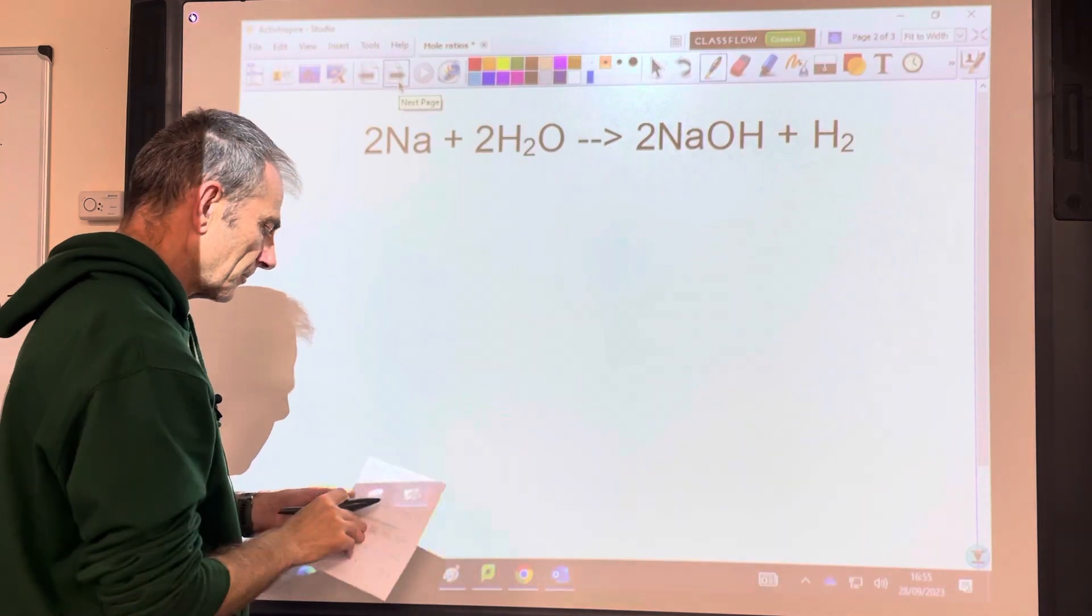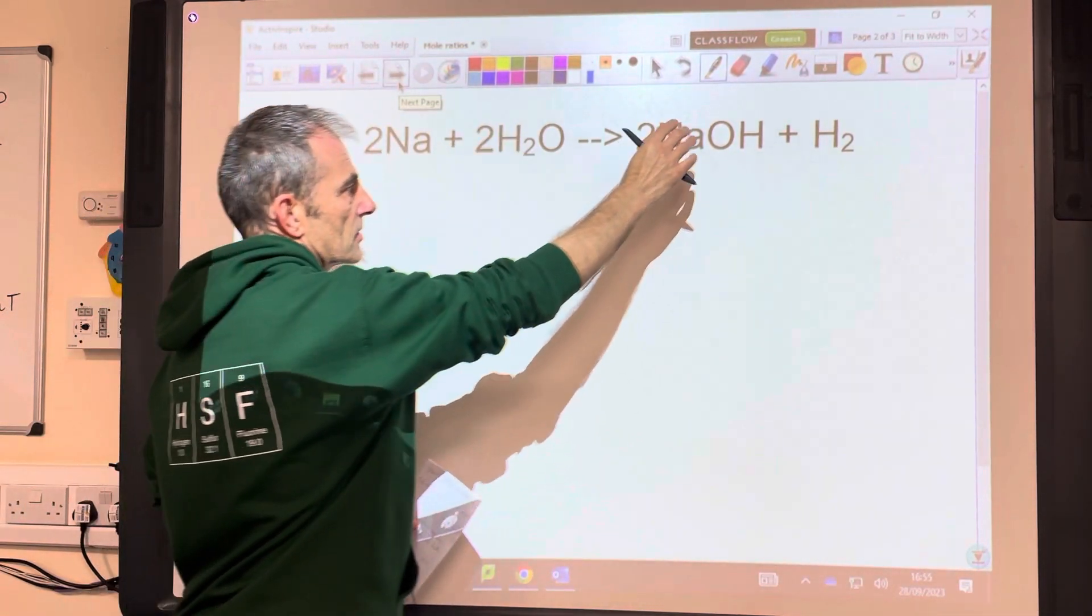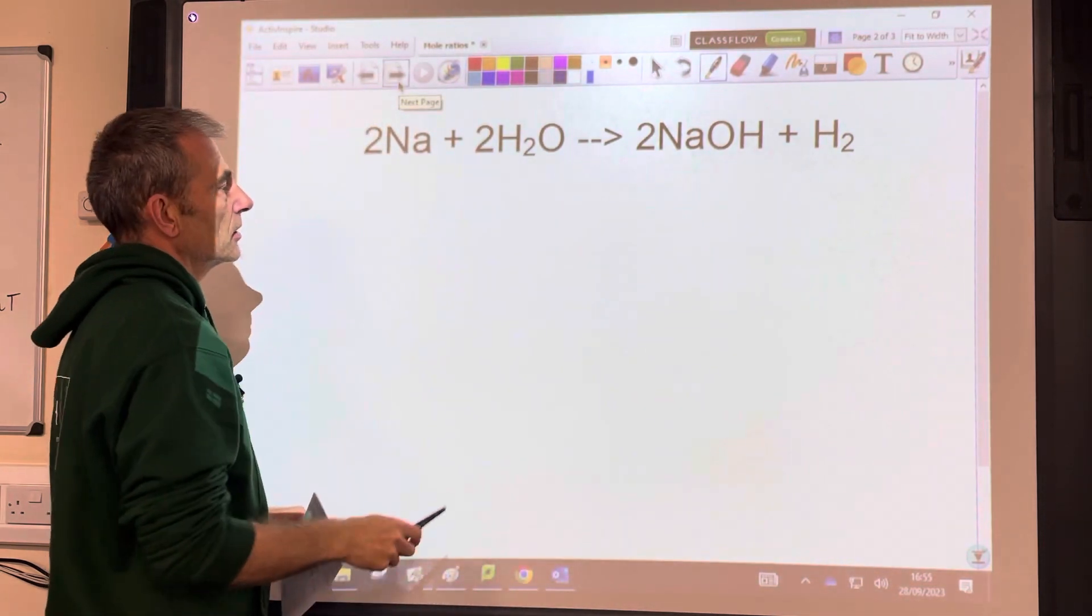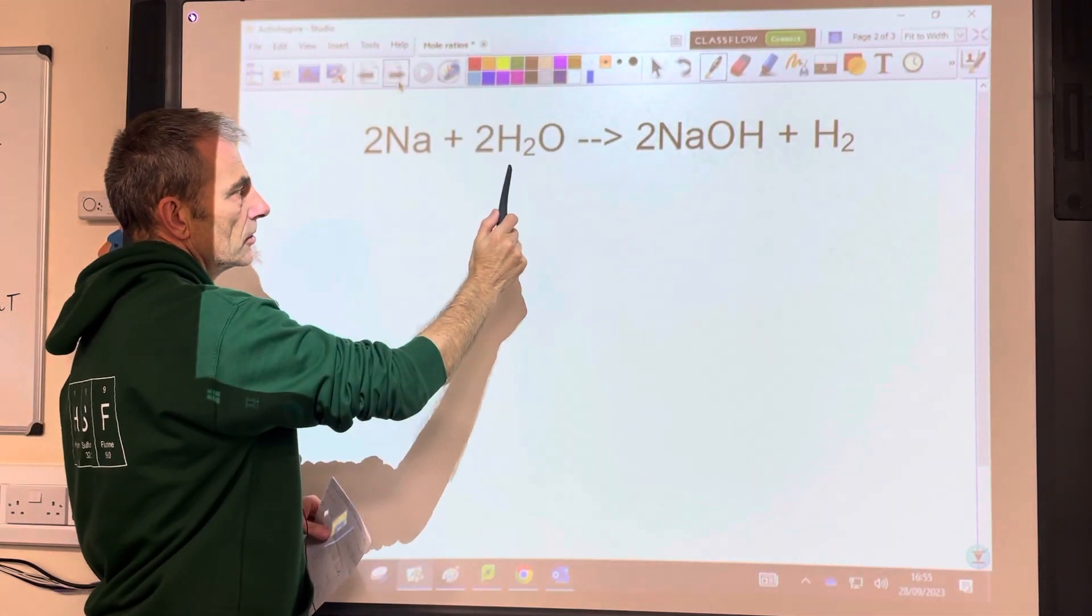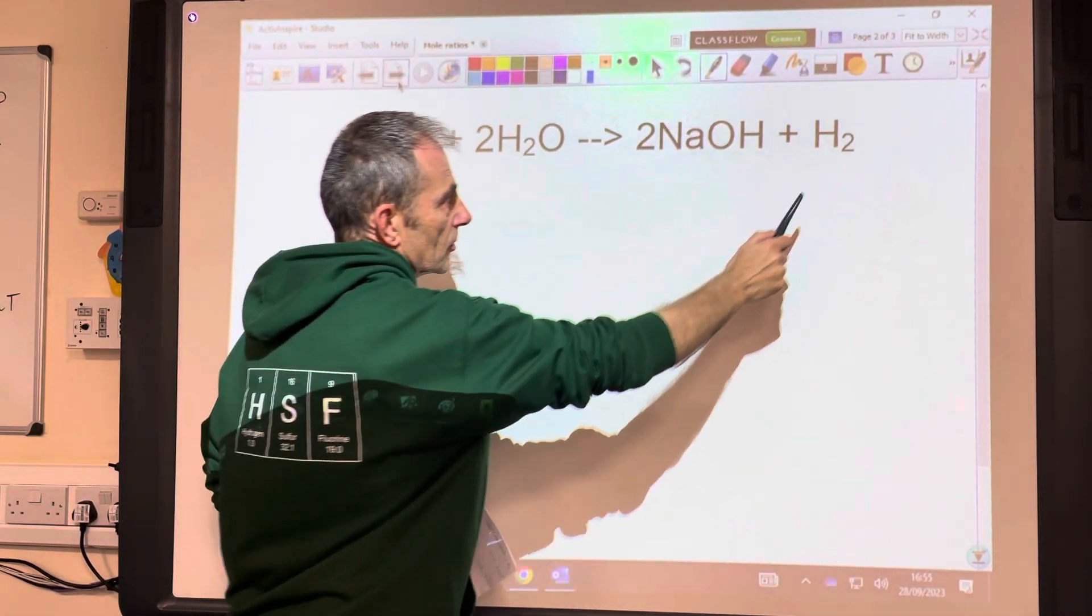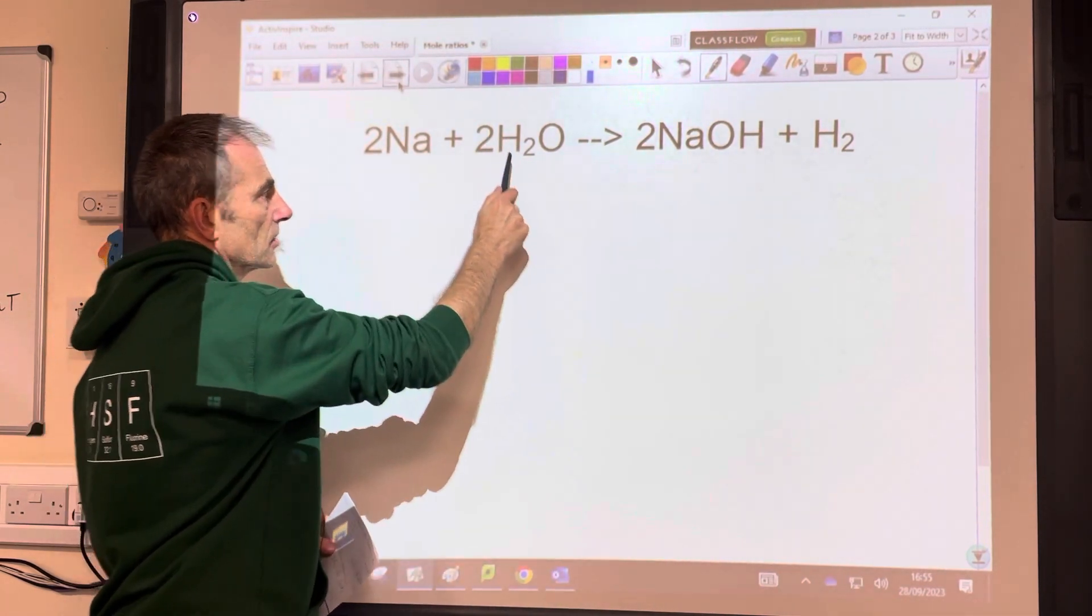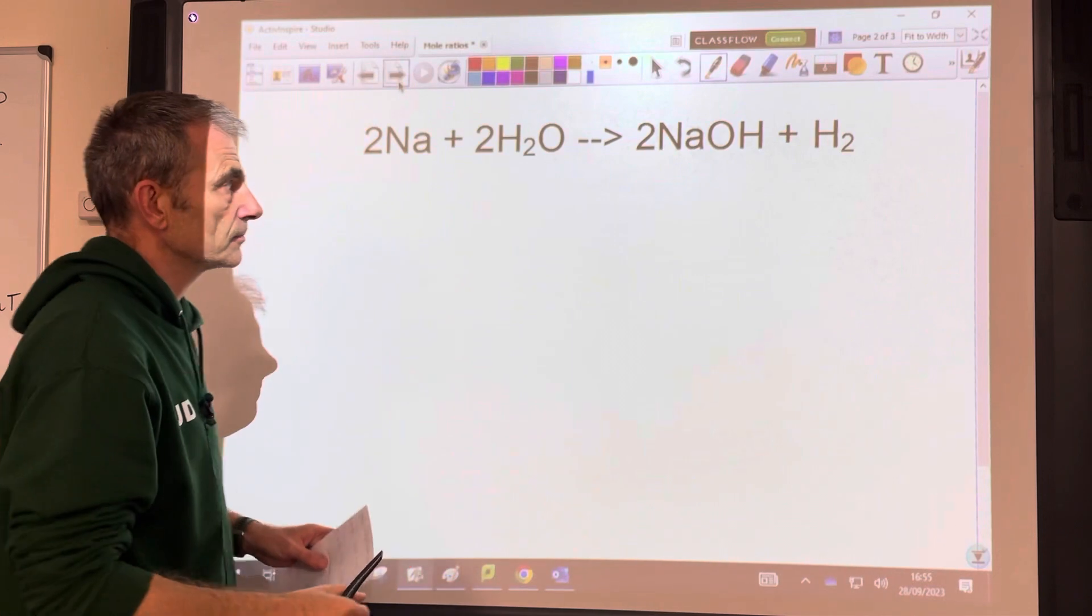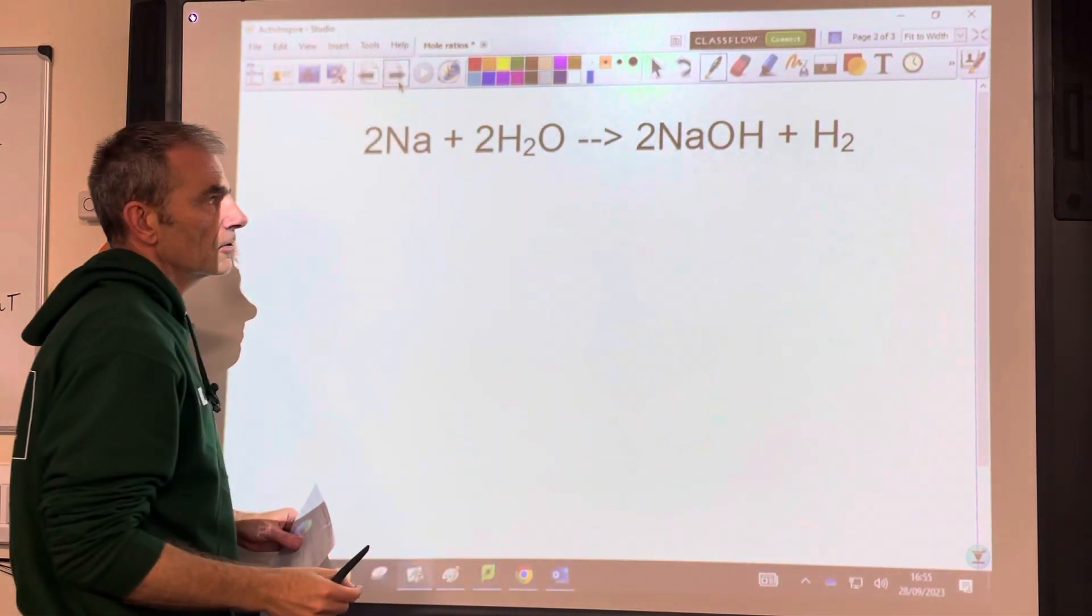So we'll move on to this one now. We've got sodium reacting with water to make sodium hydroxide and hydrogen. So if we've got 2 moles of that, we're going to need 2 moles of water. We're going to make 2 moles of sodium hydroxide. We're only going to make 1 mole of hydrogen. So we've got a 2 to 2 to 2 to 1 mole ratio. So we're just using the numbers in front of the species in the equation.